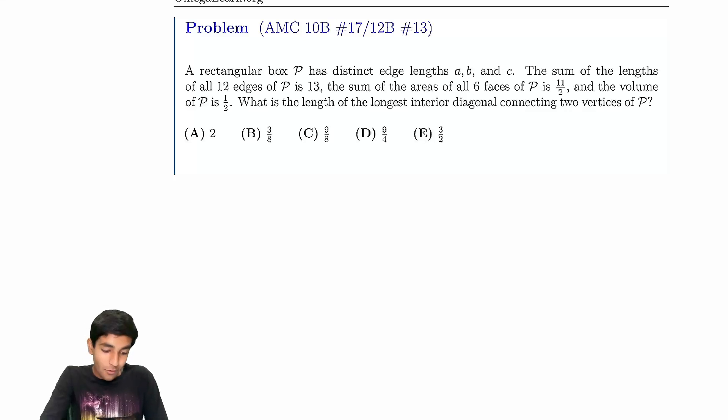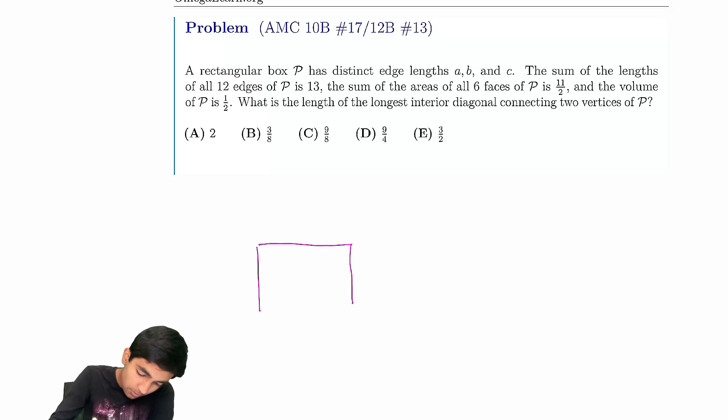Let's explore how to solve this rectangular box problem. A rectangular box has distinct edge lengths a, b, and c. The sum of all 12 edges is 13. Let's draw a rectangular box here so we can understand what's going on. We have some edges that are length a,